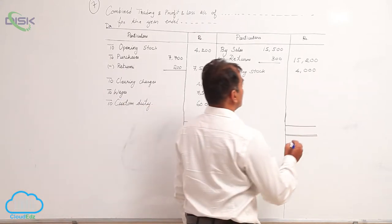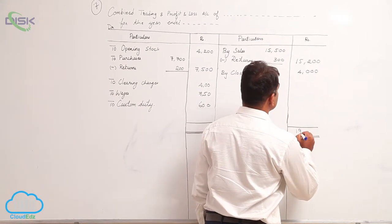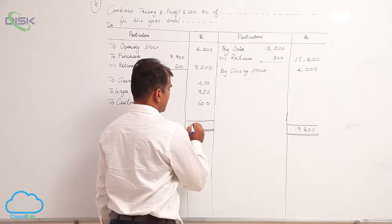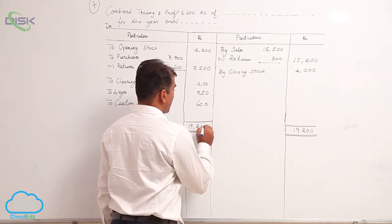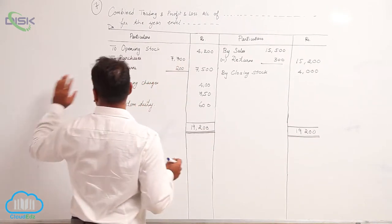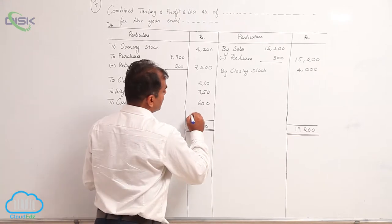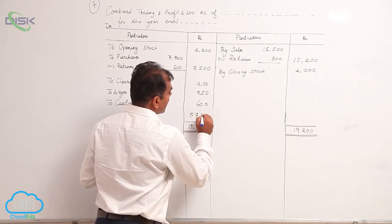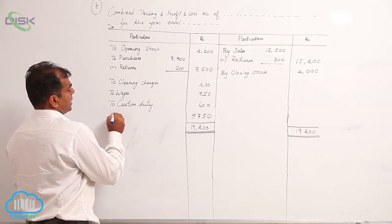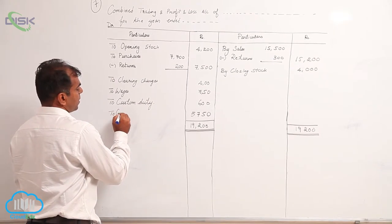You see the credit side total is 19,200, then we take the same total on the other side. When we subtract all these amounts, we get 5,750 as our gross profit, so we will write gross profit.